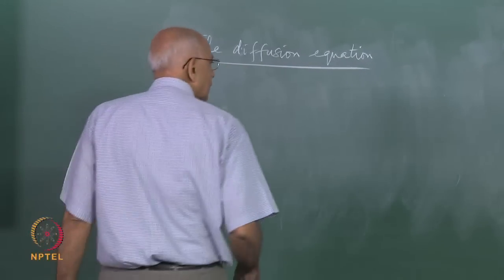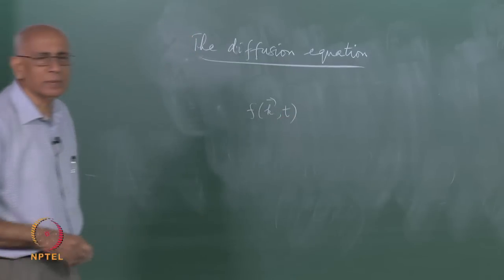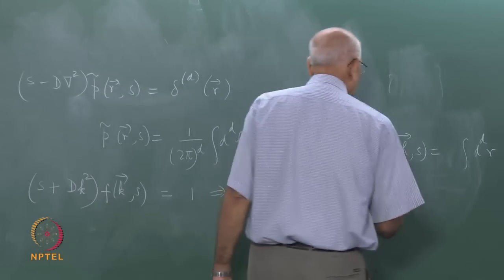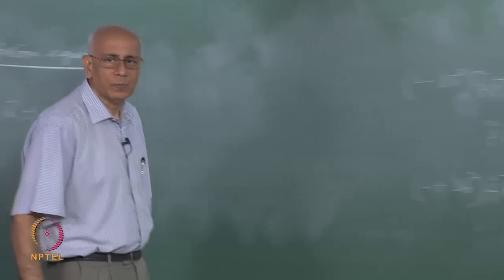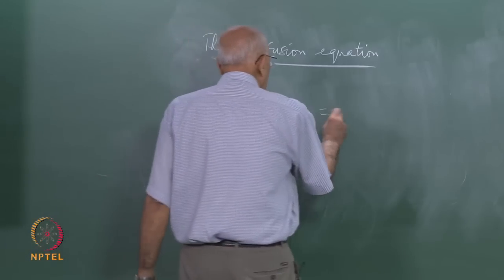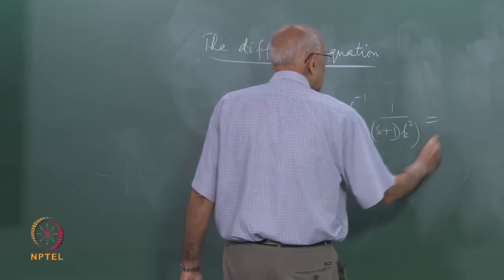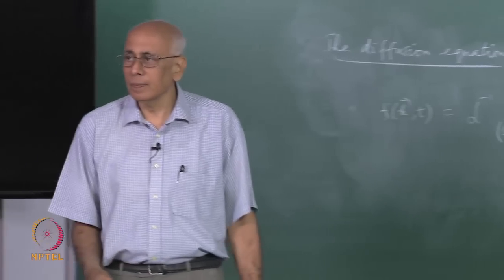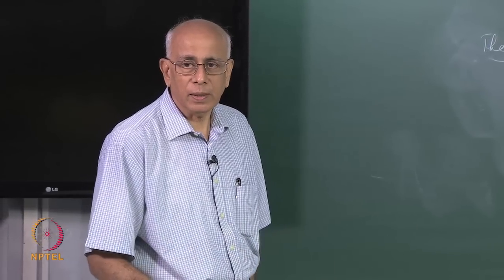On the other hand, suppose you invert the Laplace transform first. The Laplace transform is 1 over (s plus a), and the inverse Laplace transform of 1 over (s plus a) is e to the power minus a t. So it immediately tells you that the inverse Laplace transform — let me call it f-tilde of k comma t — equals e to the minus D k-squared t. That is it. This does not depend on the dimensionality of space — it is just a Laplace transform inverted, and now we only need to invert the Fourier transform.